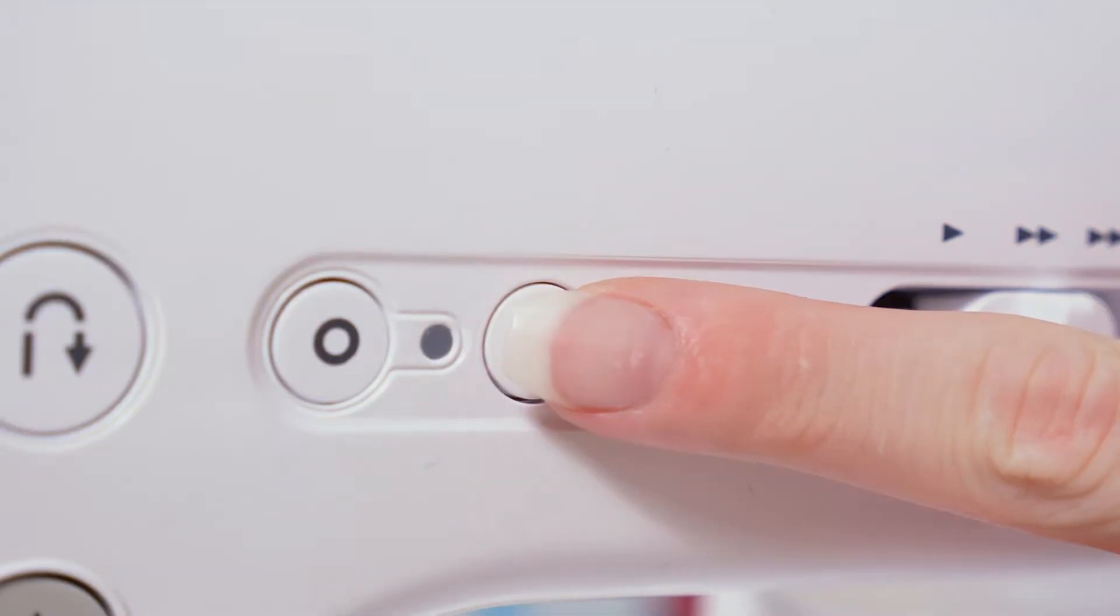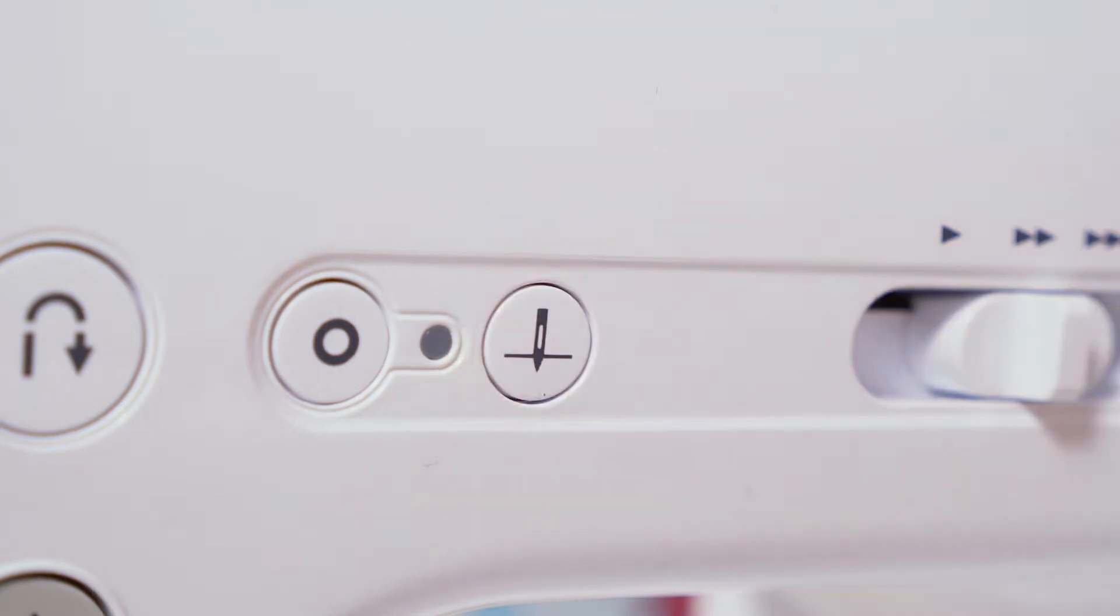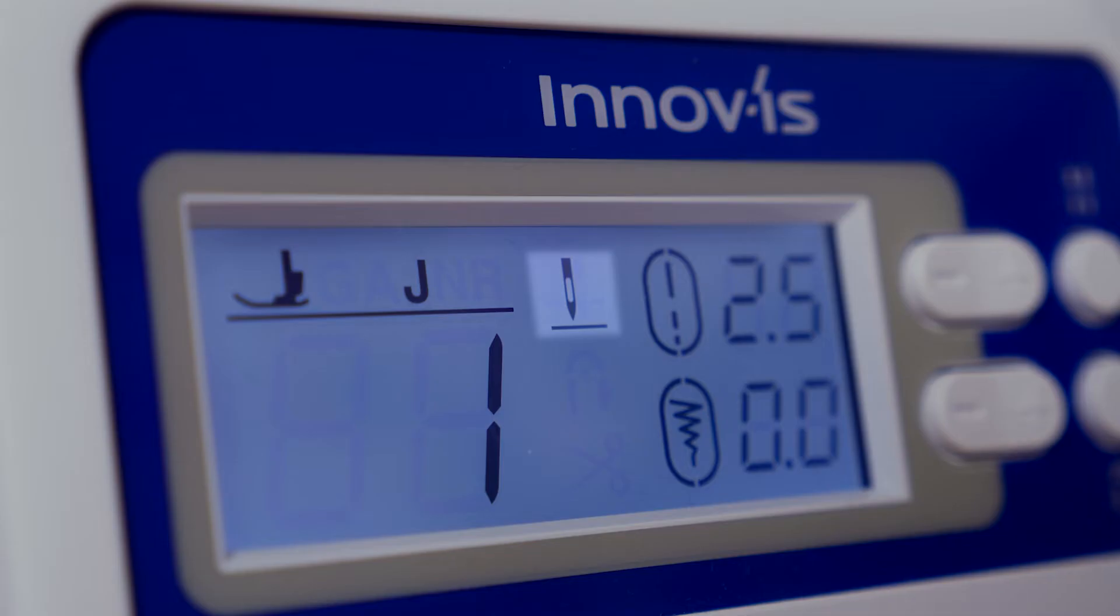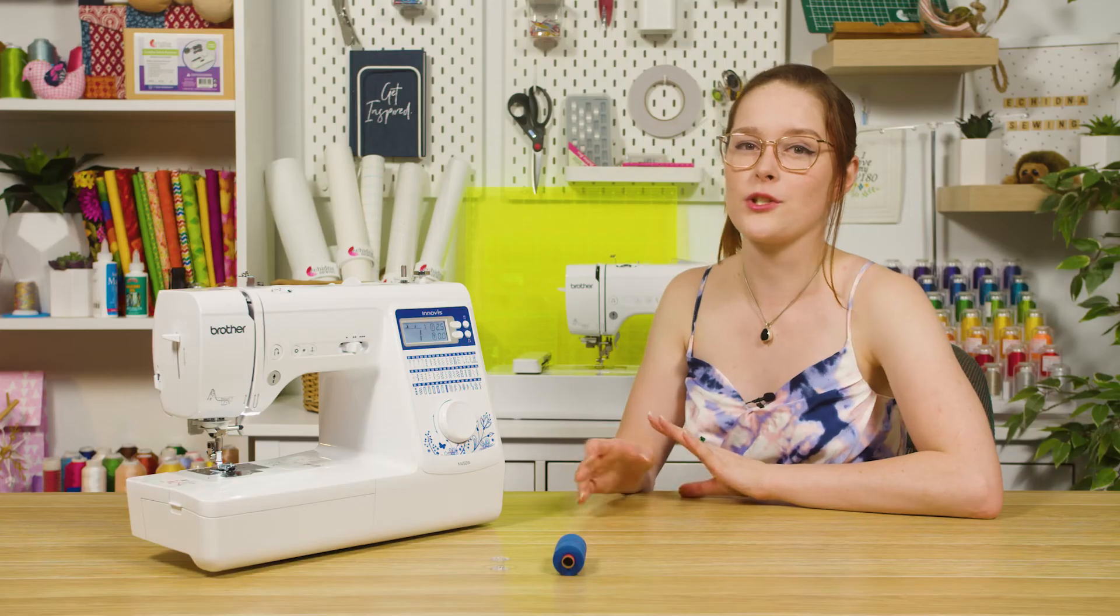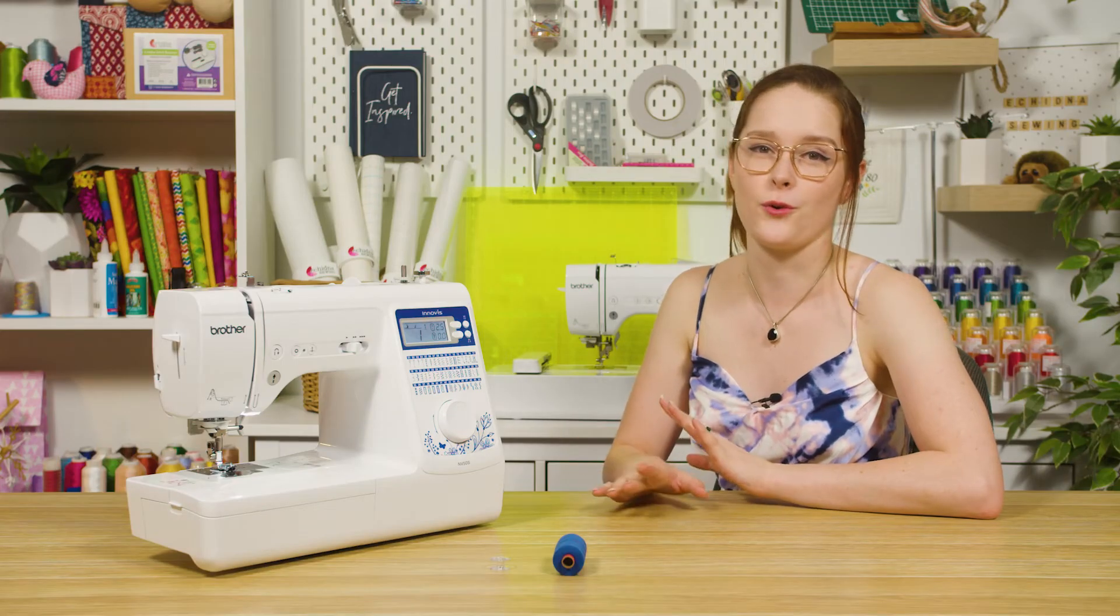If you press and hold the needle position button for about five seconds or until you hear a beep, it will switch the needle's end position to either up or down. This can be really helpful when sewing edges and pivoting around corners.